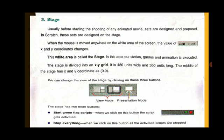We can change the view of the stage by clicking on three buttons: the screen view mode and presentation mode. The stage also has two important buttons: the Start button, which is the green flag — when we click on it, the script gets activated; and the Stop button — when we click on it, all the activity and scripts are stopped. These are the key components of Scratch. We will discuss further components in the next video.